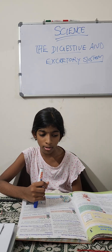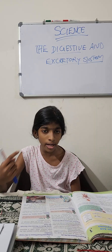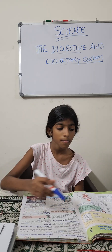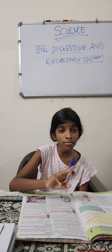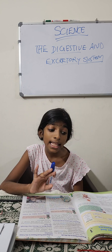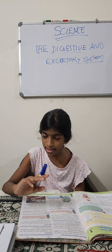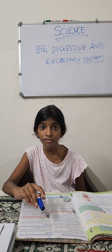Let's start with the third question. Adoption of animals. The third question is about the digestive and the excretory system.